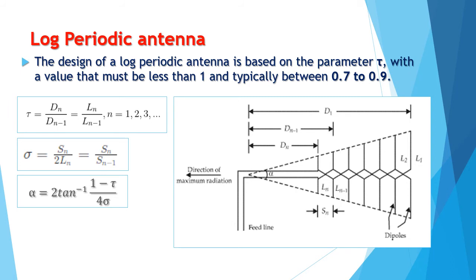The design of a log periodic antenna is based on the parameter tau, with a value that must be less than 1 and typically between 0.7 to 0.9. As you can see in the image, the log periodic antenna has the shortest elements near its front and the longest elements at its back. The dimensions of every element and the spacing of each element have a certain ratio. You can compute the length of each element and the spacings between elements using the formulas shown.